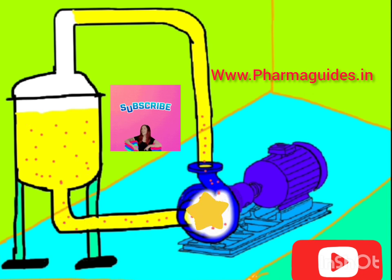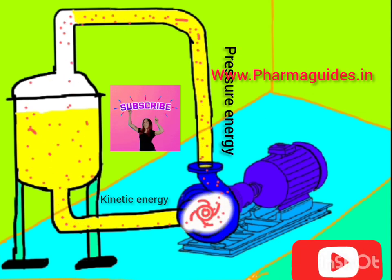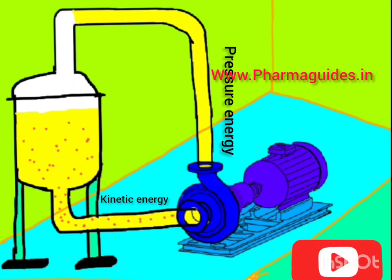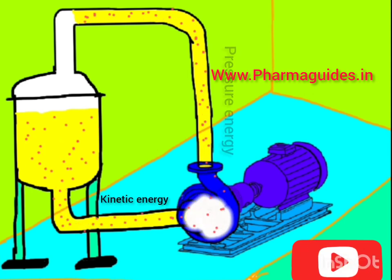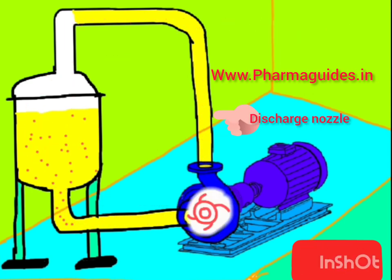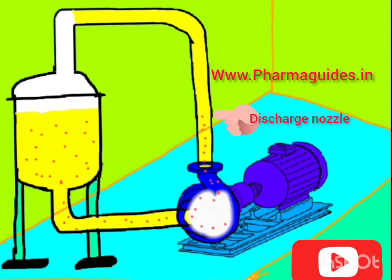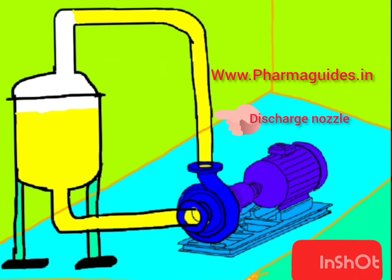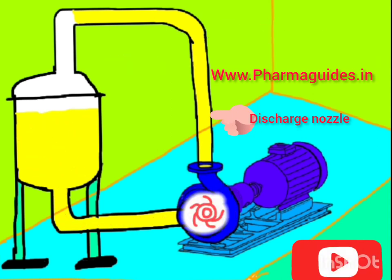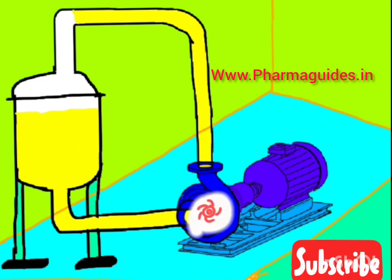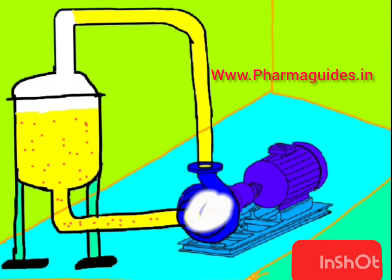The liquid is then discharged from the discharge nozzle of the pump. In summary, a centrifugal pump creates centrifugal force with the help of a rotating impeller, and the rotating impeller converts kinetic energy into pressure energy.